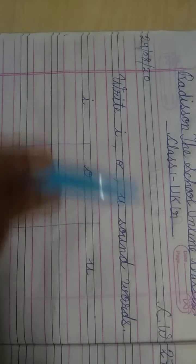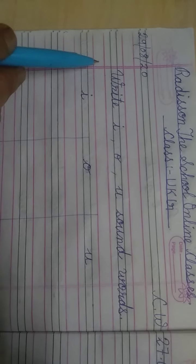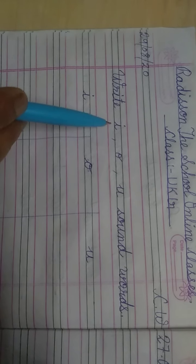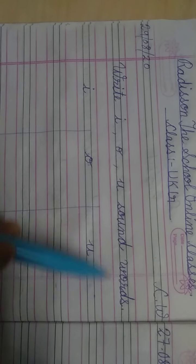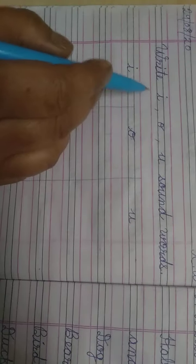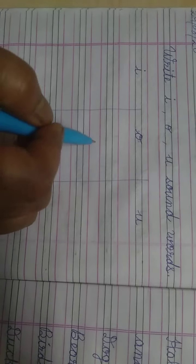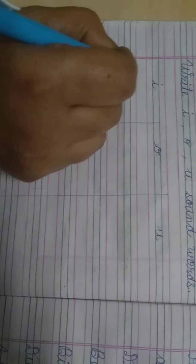Next, assignment is. First of all, you write the date and CW. Write I-O-U sound words. Okay? जैसे I sound word लिखोगे, O sound word लिखोगे और U sound word लिखोगे. I sound word क्या होता है? जैसे देखिए.